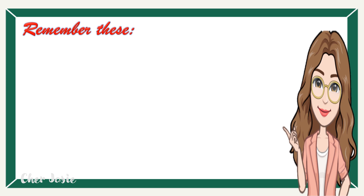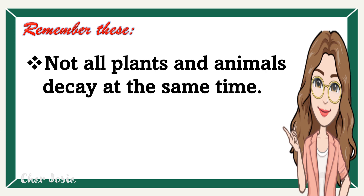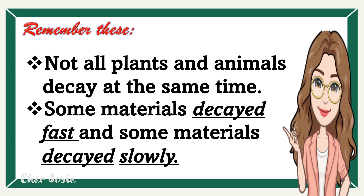Here are the things we should remember. First, not all plants and animals decay at the same time, because some were compressed underwater and under thick layers of soil over millions of years. They were converted into fossil fuels such as coal, oil, or natural gas. These fuels are used by power stations, factories, motor vehicles, and others. Some materials decay fast, like organic matter in soil — it becomes an organic fertilizer. Organic fertilizer from a compost pit does not harm but enriches the soil.